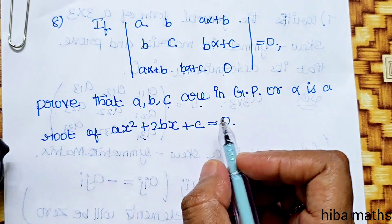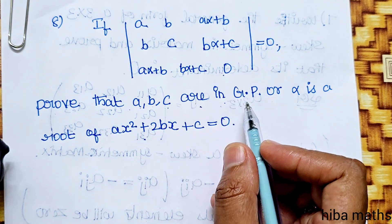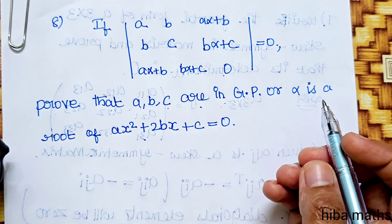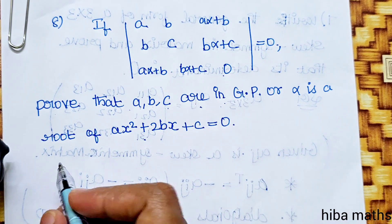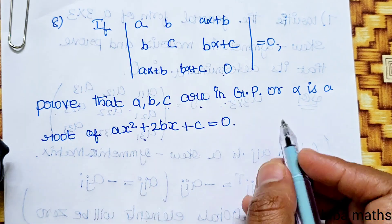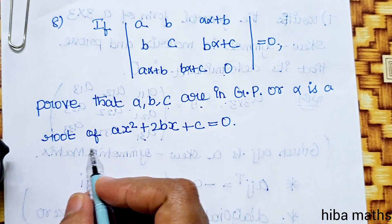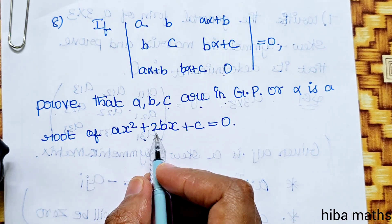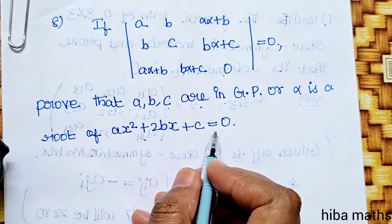We need to prove two parts: first, A, B, C are in GP; and second, α is a root of Ax²+2Bx+C=0. Let's prove part 1 now.